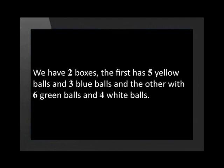We have two boxes. The first has five yellow balls and three blue balls, and another with six green balls and four white balls. We can represent the probability of choosing balls out of the two boxes on a tree diagram.